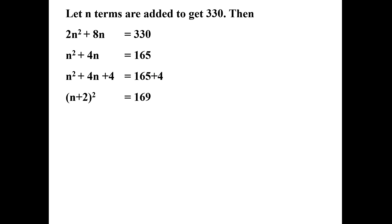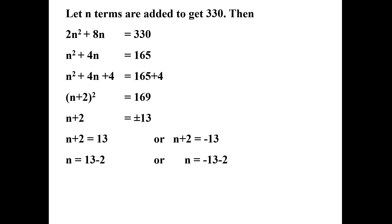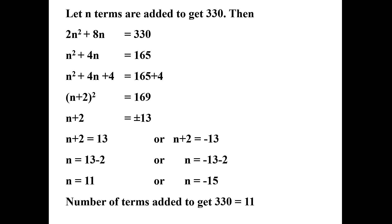Taking square roots on both sides, n plus 2 equals plus or minus 13. This gives two equations: n plus 2 equals 13, or n plus 2 equals minus 13. From the first, n equals 11; from the second, n equals minus 15. Since the number of terms cannot be negative, the number of terms to be added to get 330 is 11.